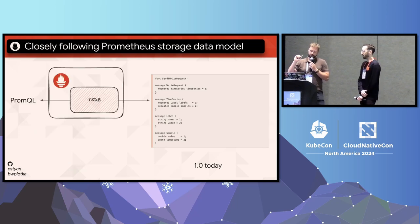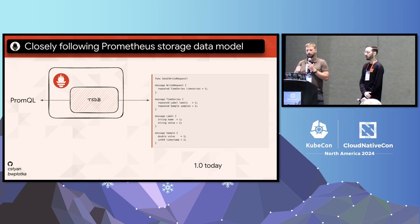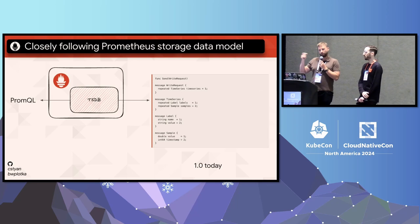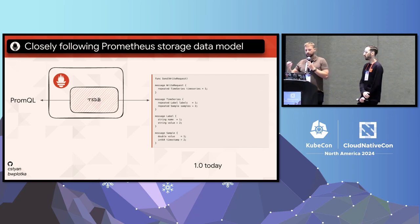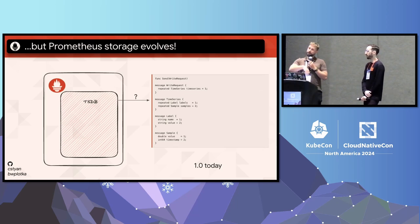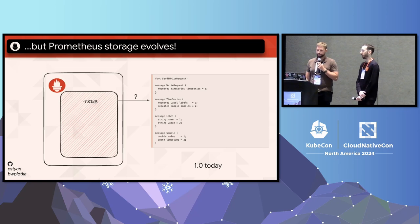Eight years ago the Prometheus team decided to keep both the PromQL language and remote write format close to Prometheus's own storage format, as opposed to taking other formats like InfluxDB's or OpenTSDB's. This decision allowed the least overhead when used with Prometheus and forced remote storages to organically adopt Prometheus's schema-less flexible format patterns. However, Prometheus storage constantly evolves — this week we are releasing Prometheus 3.0, which expands beyond the original capabilities — and as a result there is a gap between what Prometheus storage offers and what the protocol offered.